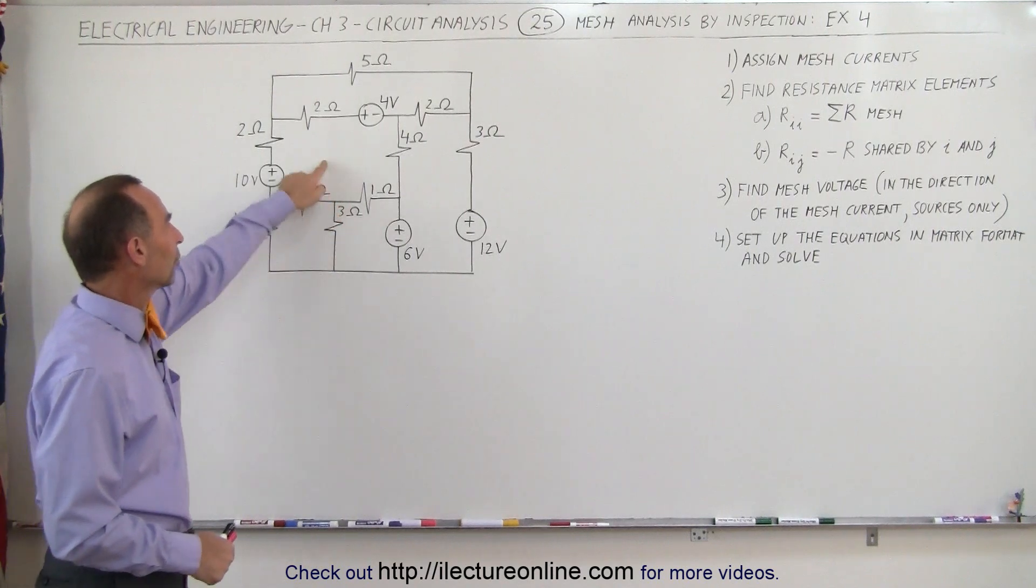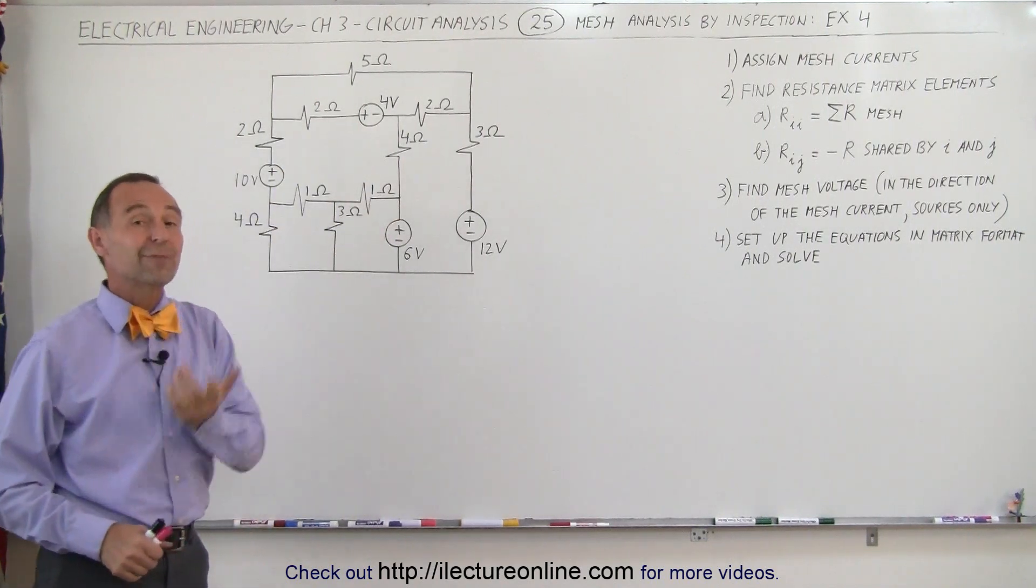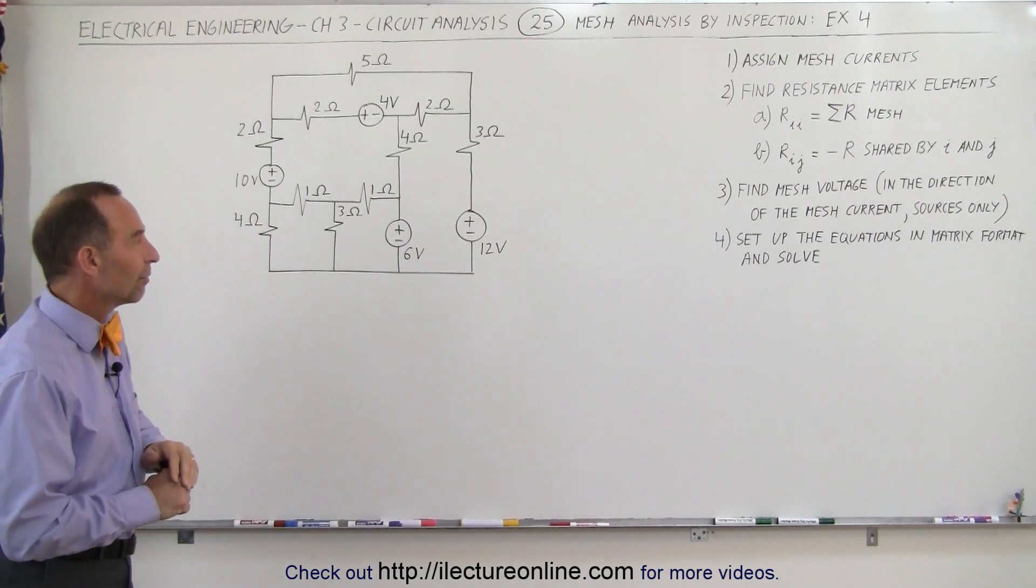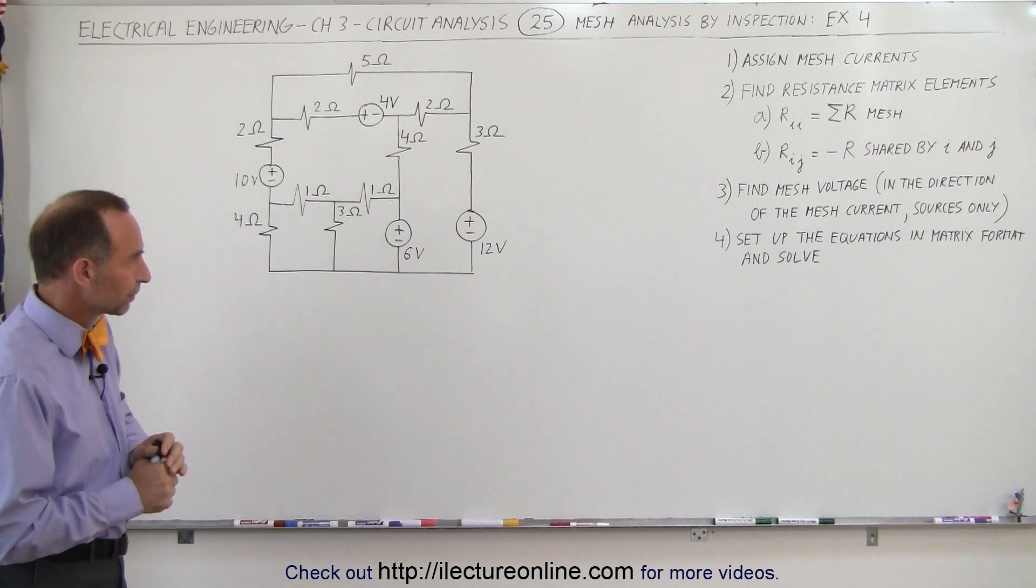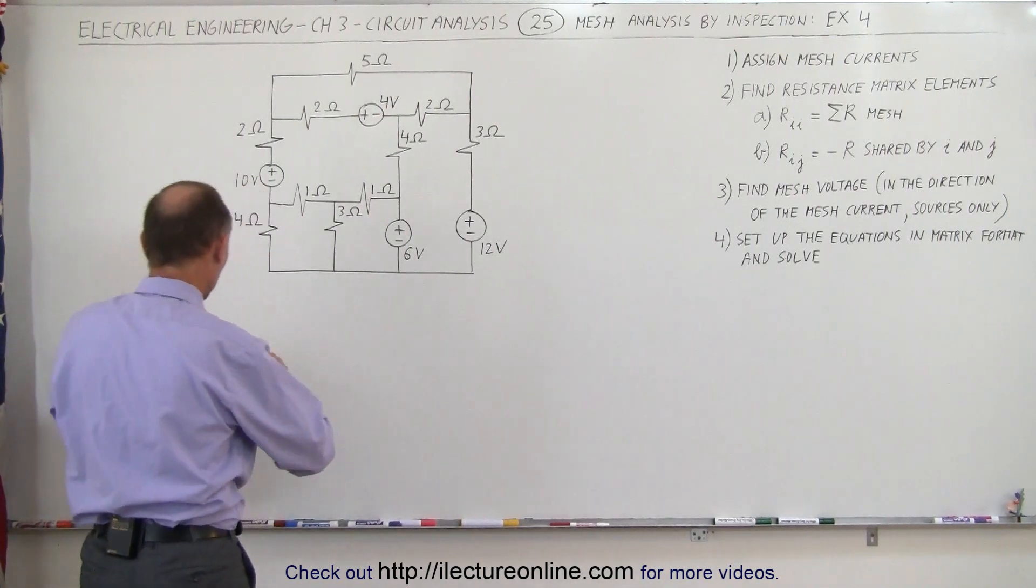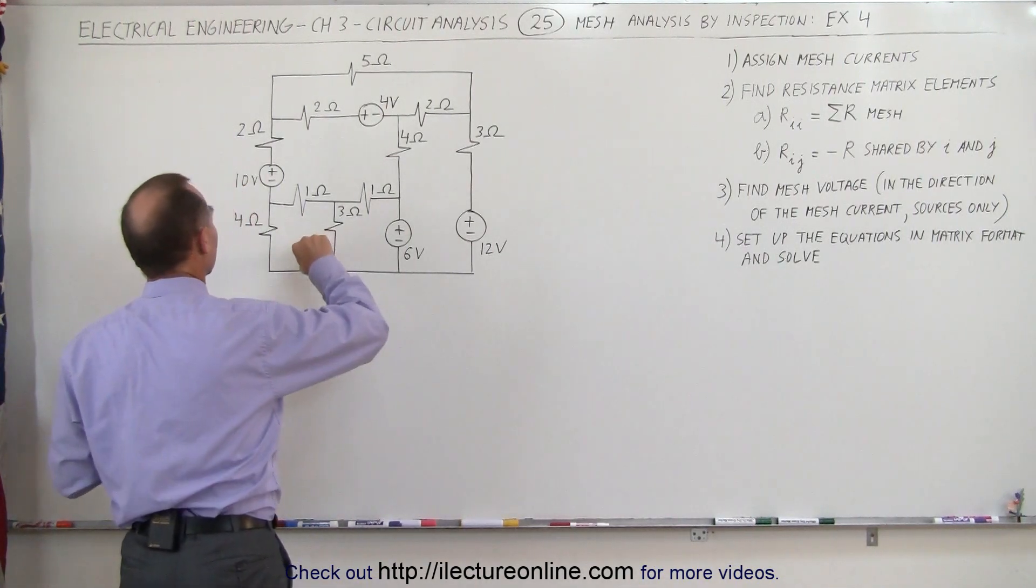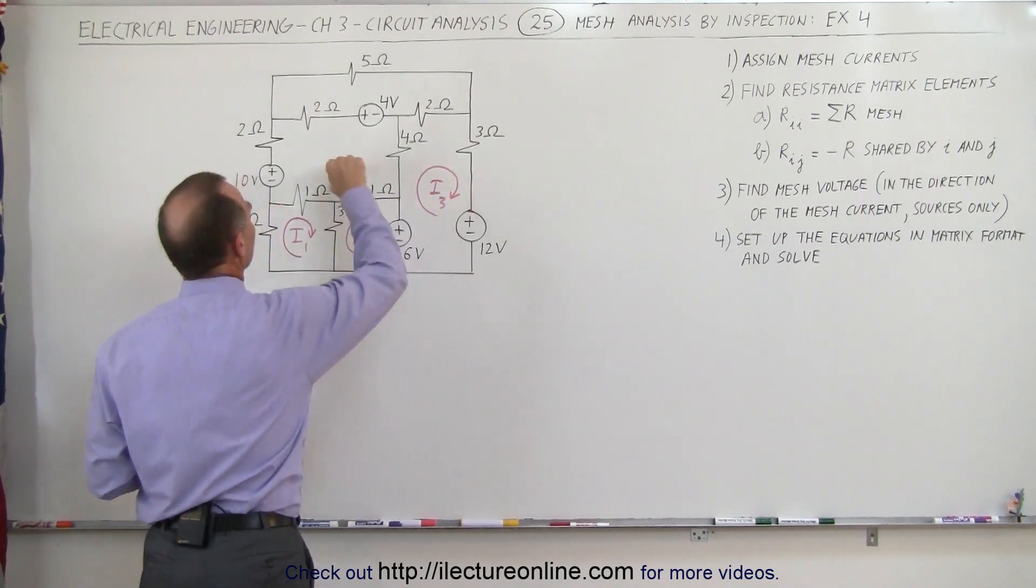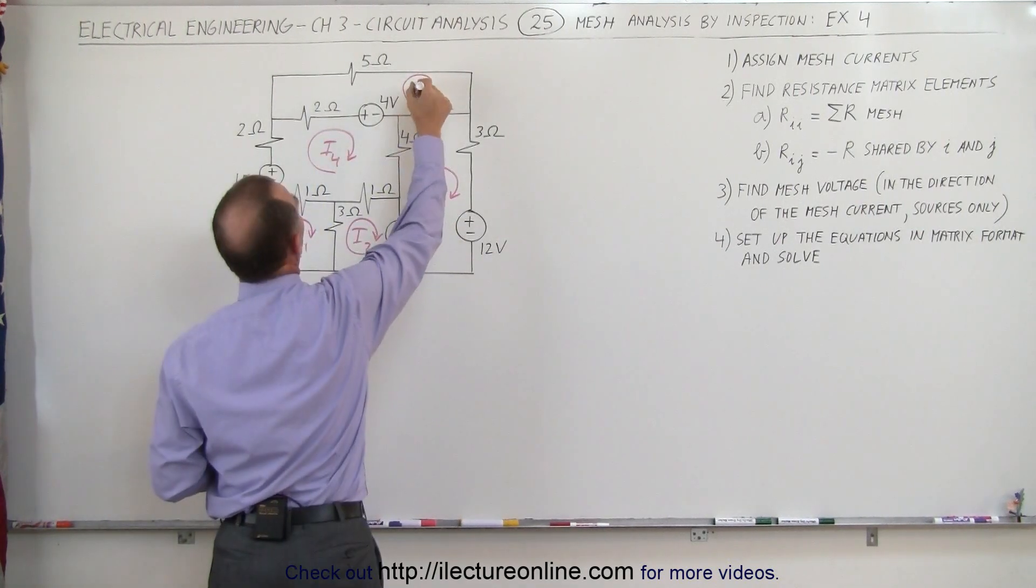Notice that there's five meshes right here, so we end up with five mesh currents and a five by five matrix to solve for the currents. First thing we'll want to do is assign the mesh currents. So let's go ahead and do that. This is I1, this is I2, I3, I4, and I5.